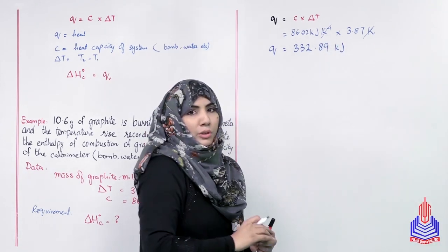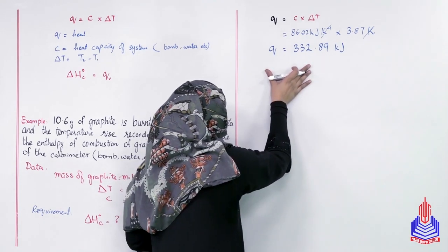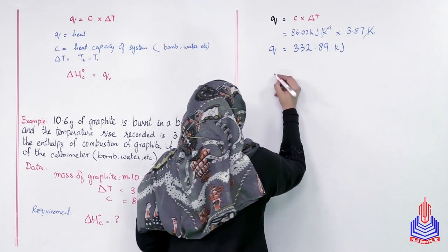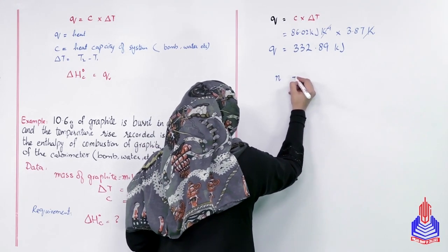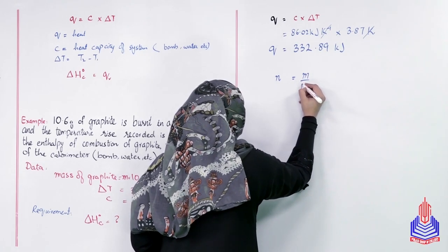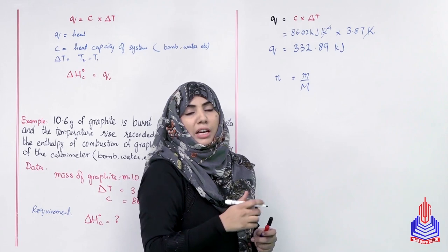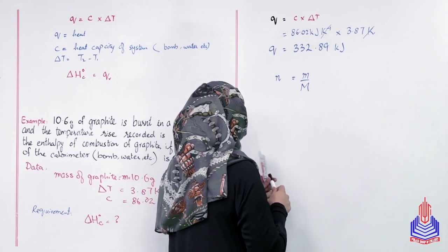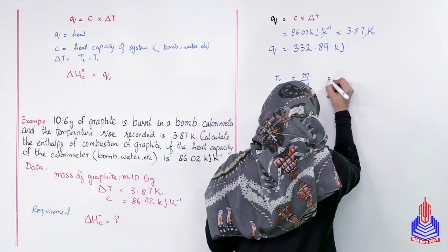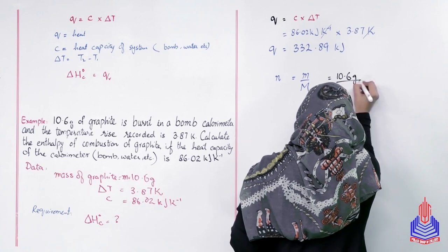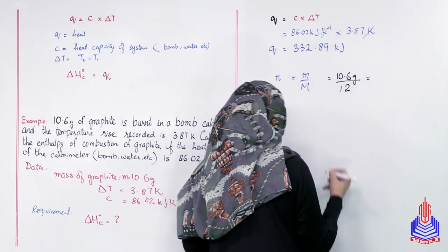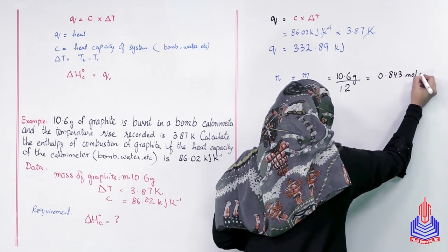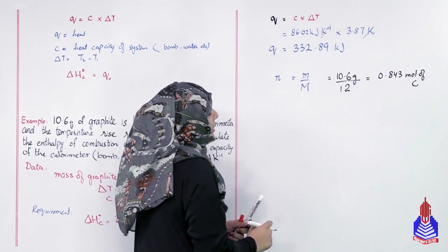यह हमने Q = 332.89 kJ calculate कर ली - for how many moles of graphite that are burned। Number of moles = mass / molar mass। यहाँ graphite is carbon, तो mass = 10.6 grams, atomic mass = 12. Number of moles of graphite = 10.6 / 12 = 0.843 moles of carbon (graphite)।